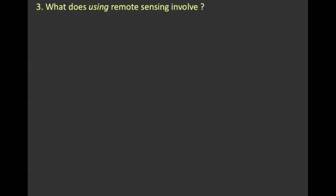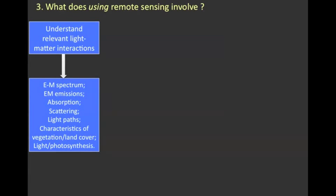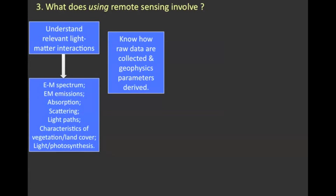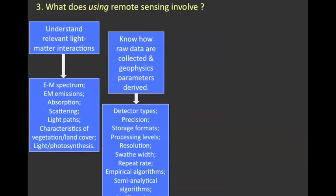A slightly different question is, what does it involve to use remote sensing data? Now we'll start with understanding what's actually happening with the electromagnetic radiation that we're detecting. So this is background information about how electromagnetic radiation is absorbed and scattered, how it interacts with the surface of the Earth. The next thing is to know roughly how the sensors are collecting data and how parameters are derived. What kind of algorithms are there? What are the processing levels? What's all the jargon mean that the remote sensing community uses?